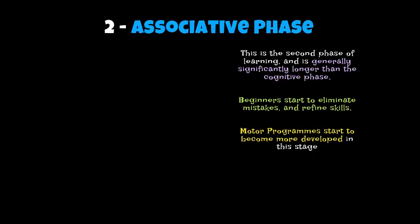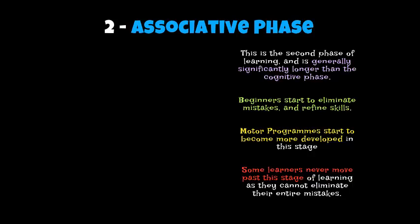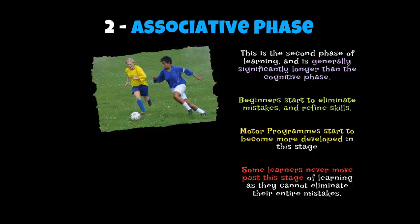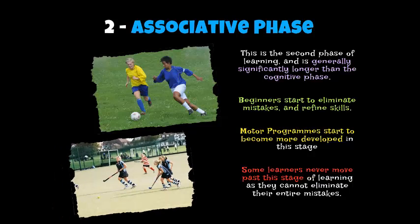Your body and muscles get used to what we call motor programs, as well as your brain developing those. However, the majority of learners never move past the associative phase into the final phase, because they cannot eliminate all of their mistakes. You often see adult learners, as well as high school and secondary school learners, still in the associative phase — some may even carry that on until later life and never leave that stage. They still have a good level of performance, but there are still errors they can't seem to eliminate.